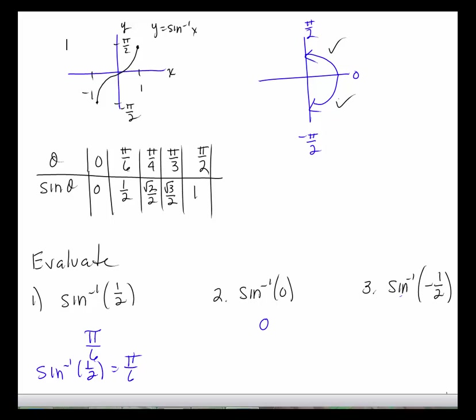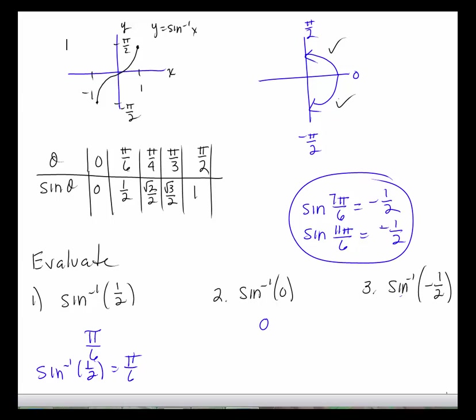The angle whose sine is negative 1/2: remember, sine is negative in both the third and fourth quadrants, but we're only allowed to take the acute negative angle because our range is from negative pi over 2 to pi over 2 — no angles outside that range. Even though the sine of 7pi/6 is negative 1/2 (third quadrant) and sine of 11pi/6 is negative 1/2 (fourth quadrant), neither is in our allowed range. Therefore the answer is negative pi over 6.